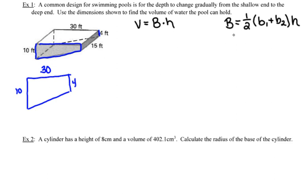And again, notice that capital B represents the area of my base. Lowercase b represents the length of the two bases of the trapezoid.